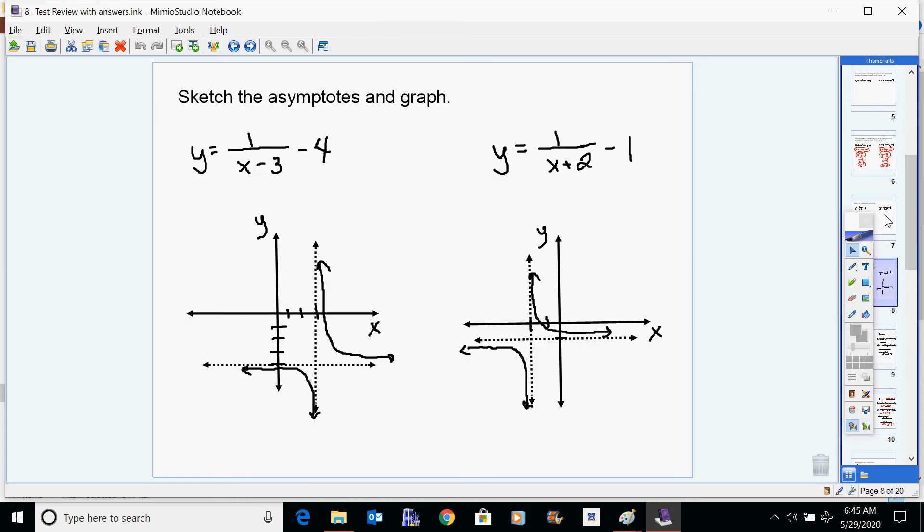Moving on here. Somebody had asked a question about asymptotes. I may have inadvertently directed you to the next asymptote section because there's two sections on asymptotes. So let's clear this up for you. If you need to sketch the asymptotes and graphs, I'm not having you submit your graphs. I'm going to do this multiple choice style again.